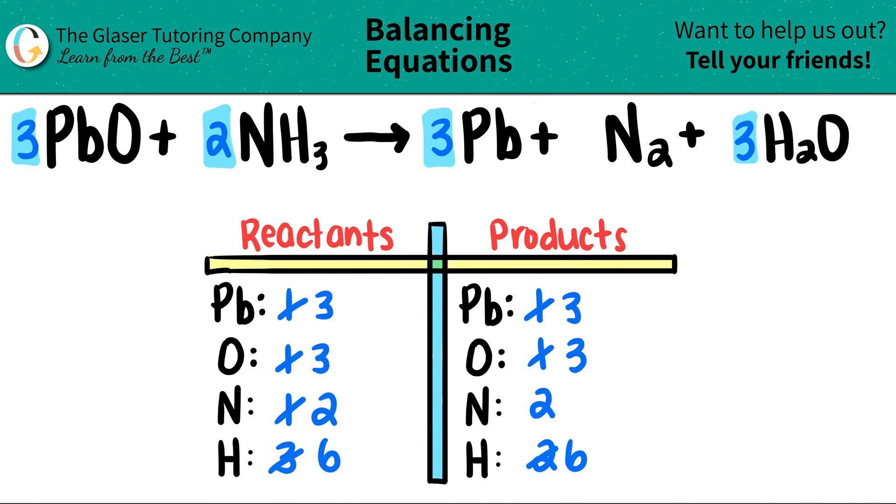And now all of the elements are balanced. Three leads on both sides, three oxygens on both sides, two nitrogens on both sides, and six hydrogens on both sides. So we're done. The balanced equation is 3PbO + 2NH3, which will yield 3Pb + N2 + 3H2O. And you are done.